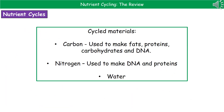We're going to look at three important materials that are cycled through our environment. The first is carbon, which is the most common element in our organisms — carbon is used to make fats, proteins, carbohydrates, DNA, etc. The second is nitrogen, which is used to make DNA and proteins. The third is water, which is one of those essential components of living things that allows them to survive.